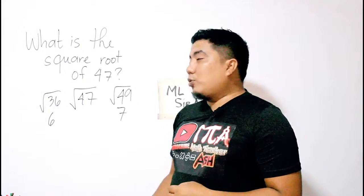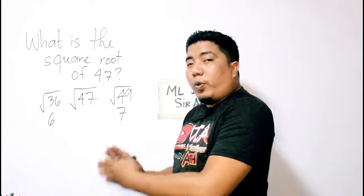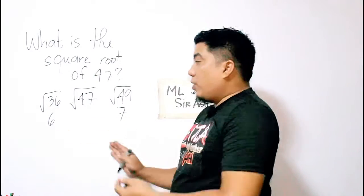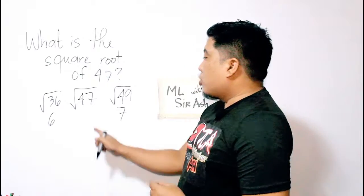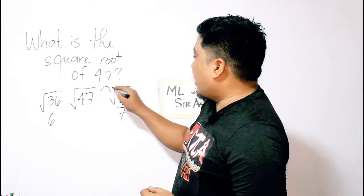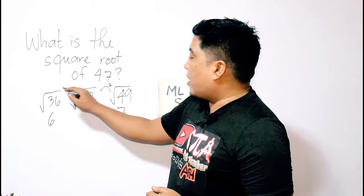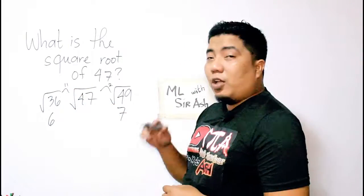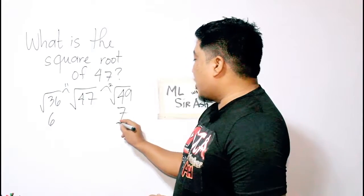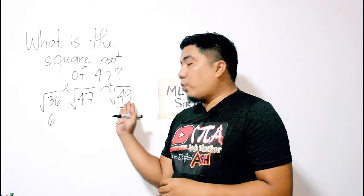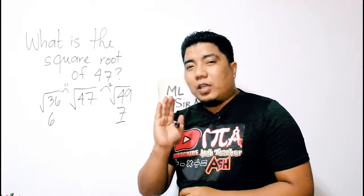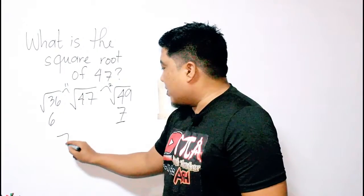The next thing you should do is to consider which perfect square is nearer from our given problem. So 47 and 49, that is a difference of 2. 36 and 47, that is a difference of 11. Therefore, square root of 47 is much nearer in square root of 49.